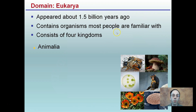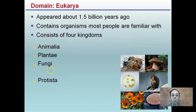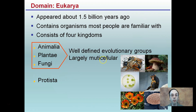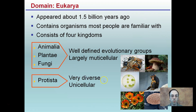The first kingdom is animals, then plants, fungi, and protists. Animals, plants, and fungi are well-defined evolutionary groups and largely multicellular. Protists are their own unique unicellular and very diverse group. All four of these are still under the domain Eukarya, but the four kingdoms within that can be slightly different.